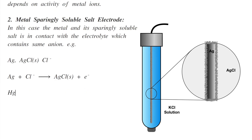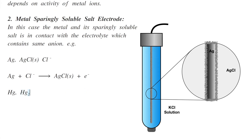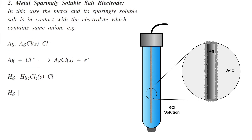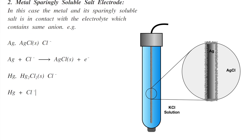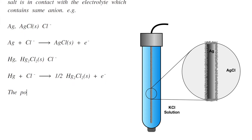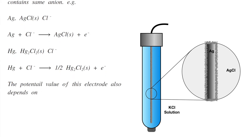Similarly, mercury and mercurous chloride solid, the sparingly soluble salt, in contact with chloride ions. The oxidation reaction is: Hg + Cl⁻ → ½Hg₂Cl₂(s) + e⁻. The potential of this electrode also depends on the activity of the chloride ions in solution.